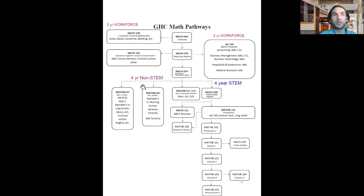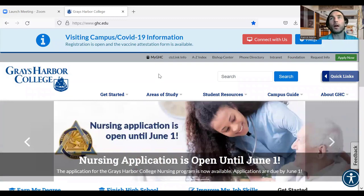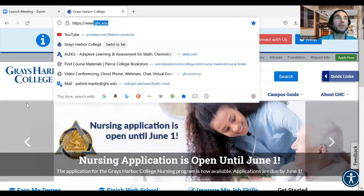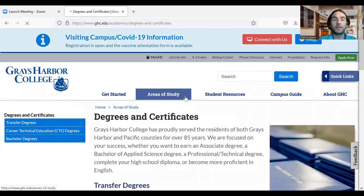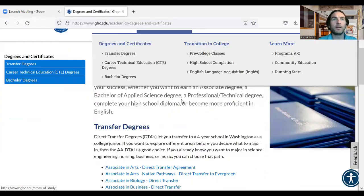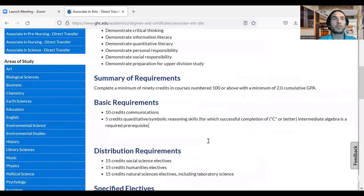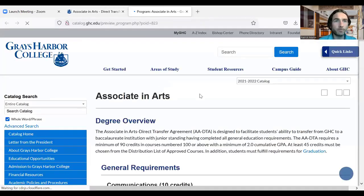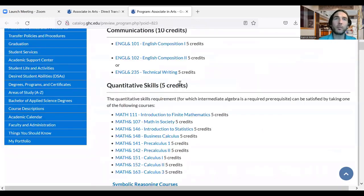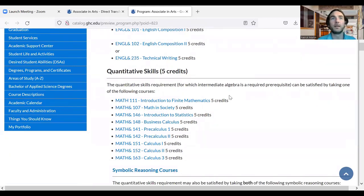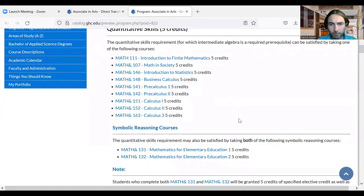For non-STEM bachelor degrees, there are a range of options: Math 107, Math 146, Math 131 and 132, and Math 111 and 148. You can see all specific requirements by going to ghc.edu, then areas of study, then degrees and certificates. For example, let's take a look at the most common transfer degree, the Associate in Arts Direct Transfer Agreement. I'm going to scroll down and have a look at the prerequisites on the course list. The quantitative skills requirement is your math requirement. You just need five credits, but please pick a math class that aligns with your future bachelor's degree.